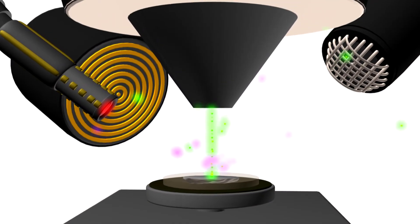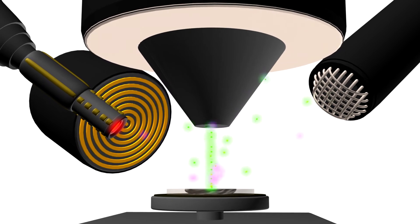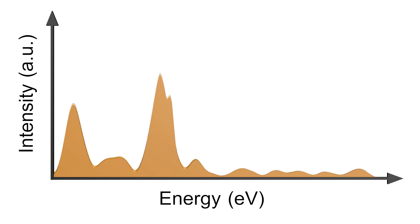To measure the elemental composition of the meteorite, we need to bombard it with electrons that have sufficient energy to knock out the electrons from the sample atoms. During the relaxation of these excited atoms, characteristic X-rays are emitted, and by measuring their energy and intensity, we get to know about the elemental composition of our substrate.